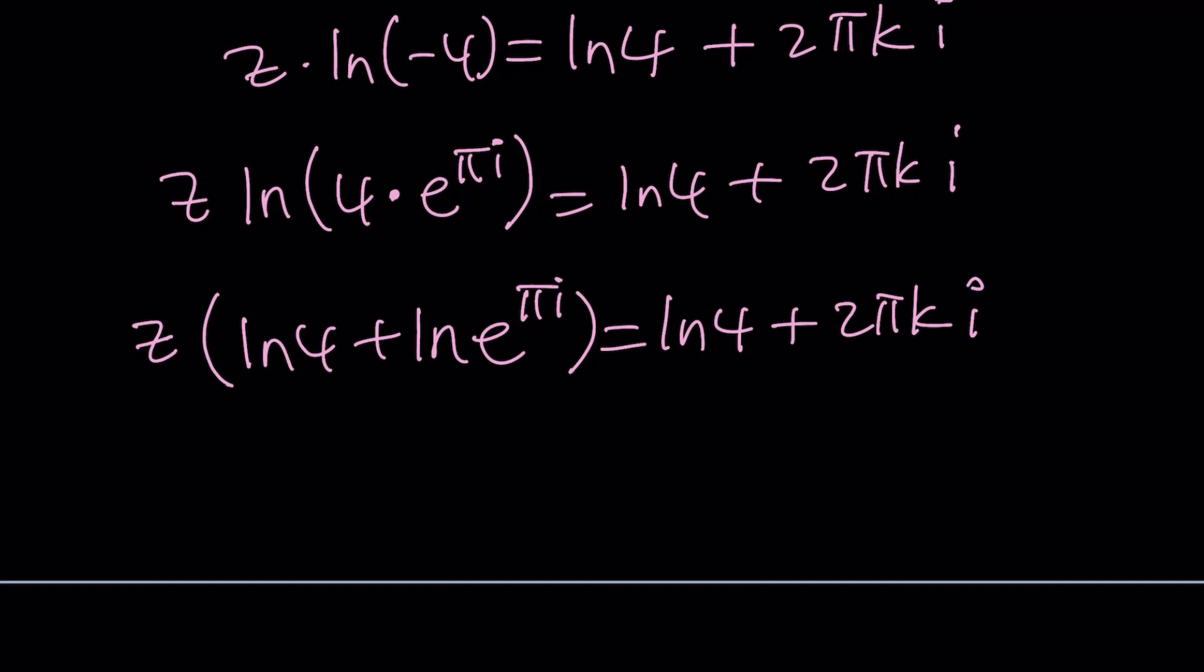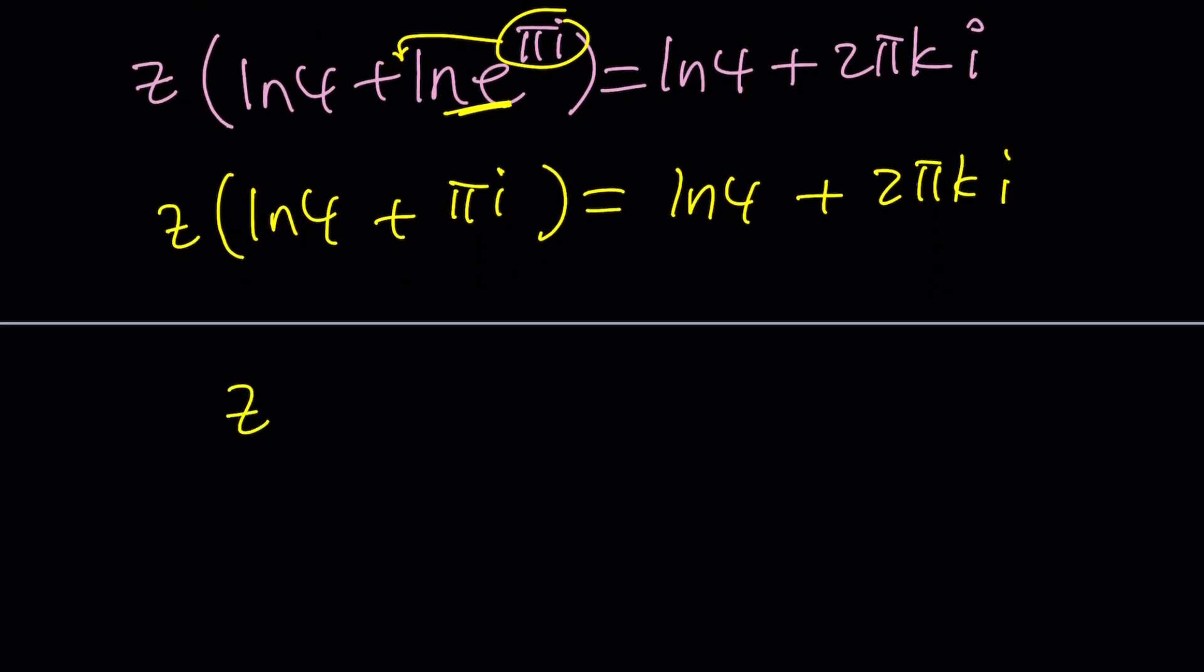And then when you move this pi i to the front, you're going to get pi i times ln e, which is 1, so don't worry about it. You're going to get z times ln 4 plus pi i. We're almost there. And then we're just going to divide both sides by this, and that's going to give us the answer, right? Cool.